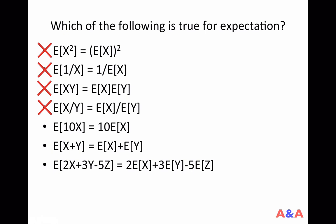The good news is that the expectation operator satisfies so-called linearity. For example, the expectation of 10 times random variable X is simply equal to 10 times its expectation. The expectation of the sum of two random variables is simply equal to the sum of their expectations. And the expectation of 2X + 3Y − 5Z is simply equal to 2·E[X] + 3·E[Y] − 5·E[Z]. You can take constant coefficients and plus/minus operators out of the expectation.